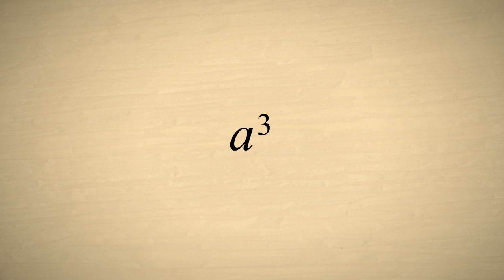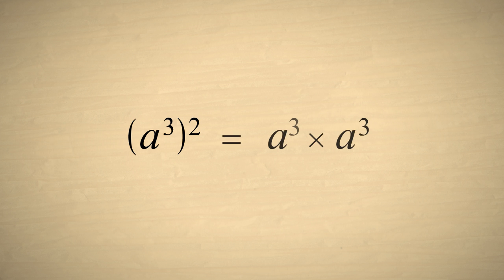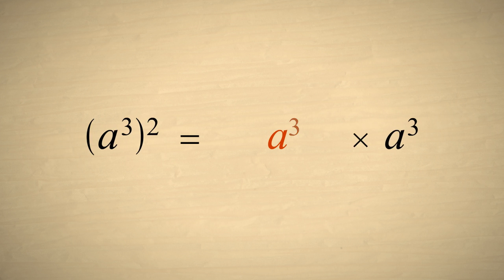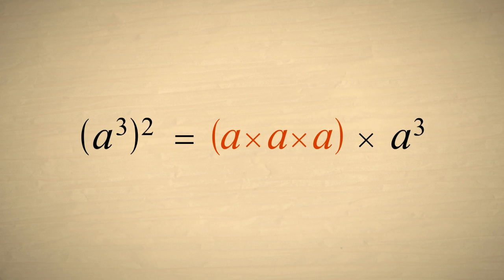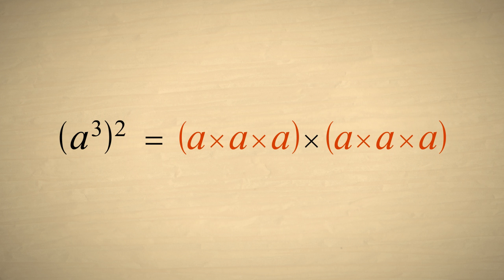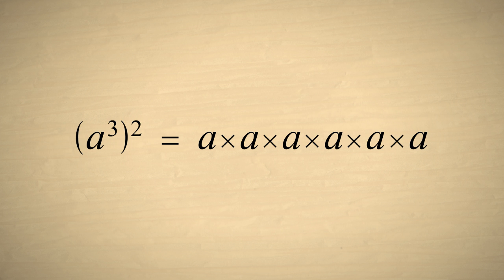For example, let's say we take the expression a-cubed and square it. This is equivalent to two copies of a-cubed multiplied together, which is a times a times a times a times a times a. Of course, six a's multiplied together is a to the sixth power.